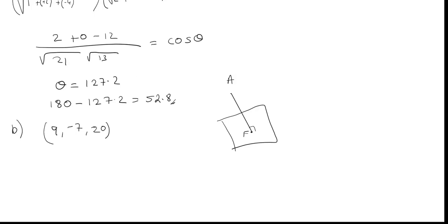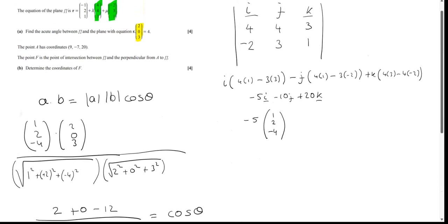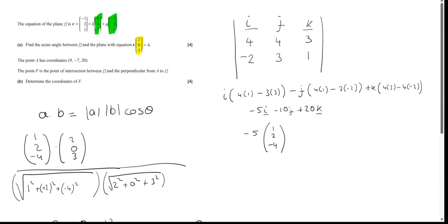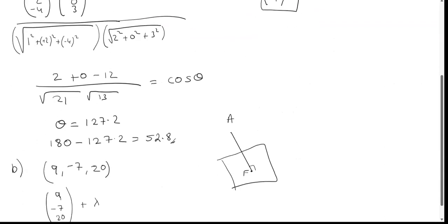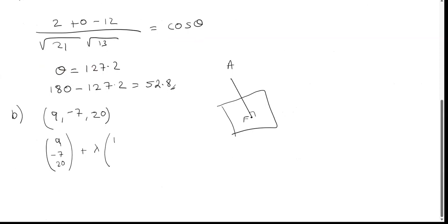The equation of the line is r = a + λb, where a is a point on the line — which is point A — and b is the direction vector. Since the line is perpendicular to the plane, and we found that the normal direction is (1, 2, −4), we use that as our direction vector. Now, to find the point of intersection with the plane, we substitute this line equation into the equation of the plane.